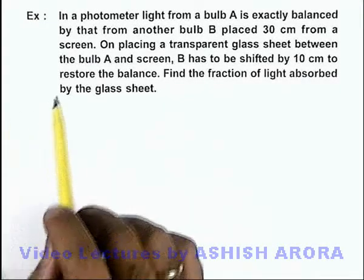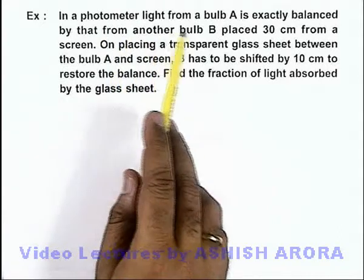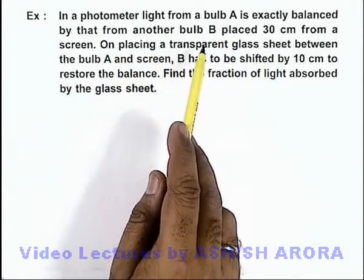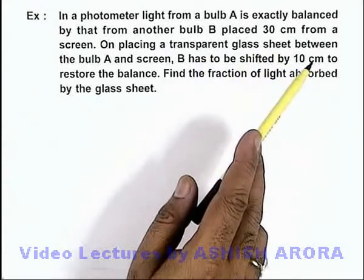In this example we are given that in a photometer, light from a bulb A is exactly balanced by that from another bulb B, placed 30 centimeters from a screen.